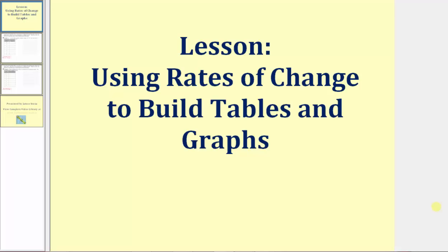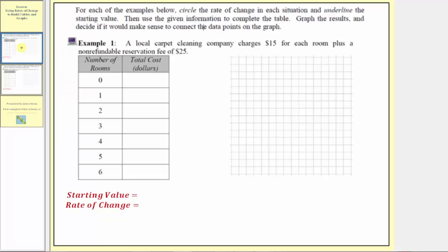Welcome to part one of the lesson on using rates of change to build tables and graphs. For each example, we're asked to circle the rate of change in each situation and underline the starting value. Then use the given information to complete the table. Then graph the results and decide if it would make sense to connect the data points on the graph.